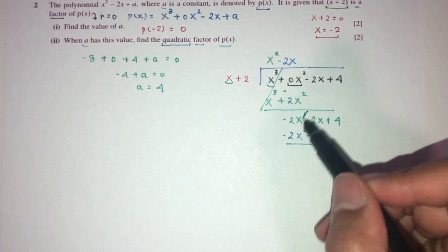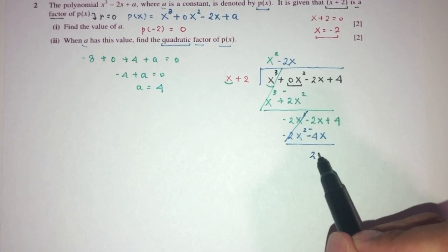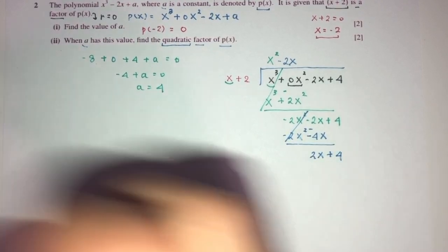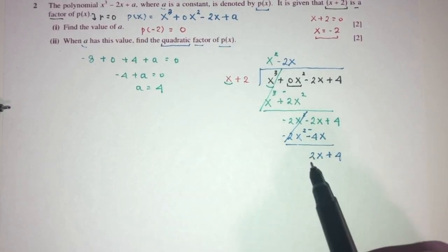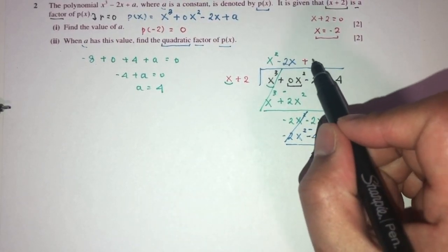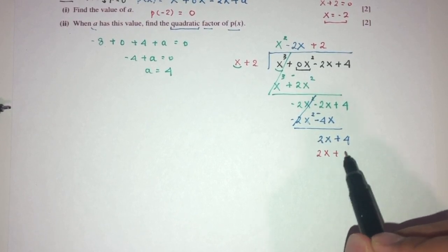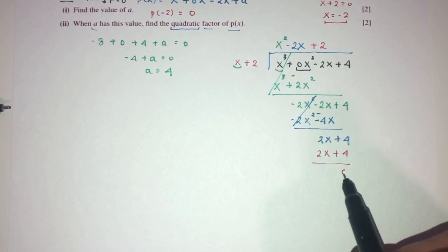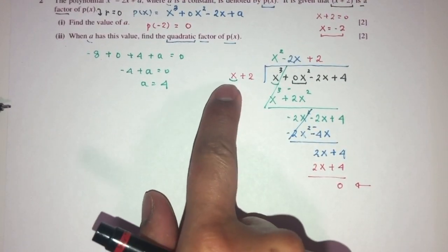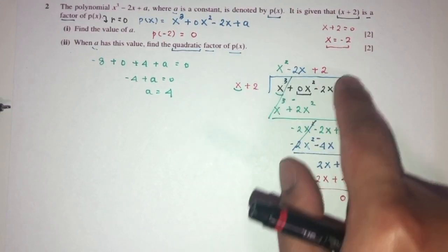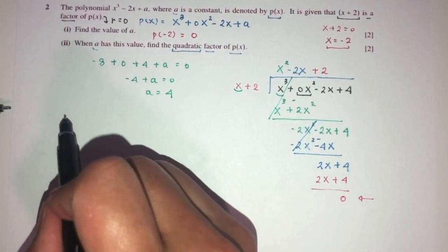Subtract: −2x − (−4x) = +2x, bringing down +4 gives 2x + 4. Now to make x become 2x, multiply by +2, giving 2x + 4. Subtracting gives remainder 0, as expected since (x + 2) is a factor. The quotient is your quadratic factor.